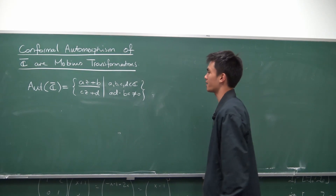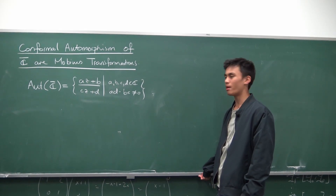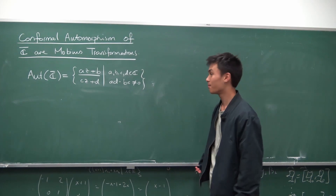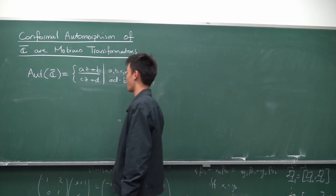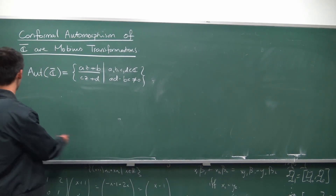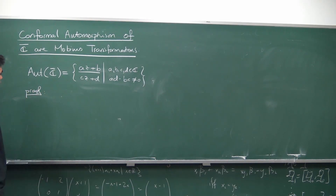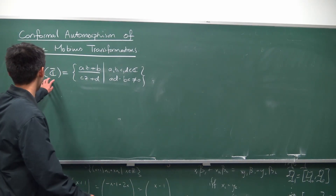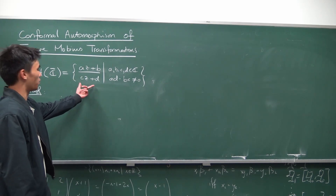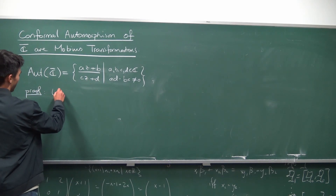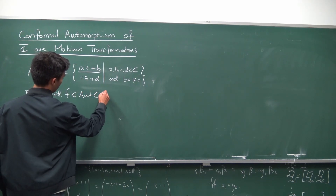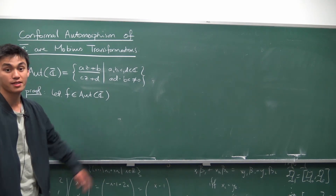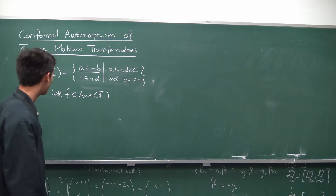So this is essentially what we want to prove today. I'm going to try to prove this without my notes, so hopefully I don't make any silly mistakes. So: proof. Let's first of all choose some function f that belongs in Aut(C-bar), and we're just going to show that it takes this Möbius form. So f maps from C-bar to C-bar, and there are a few cases to consider.